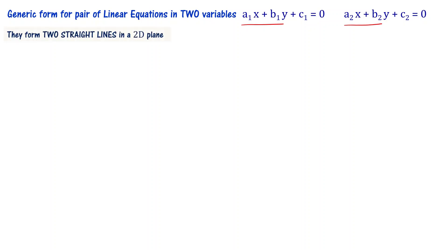Before solving this problem, let us quickly recall some concepts relevant for this. We know that the generic form for pair of linear equations in two variables is a1x plus b1y plus c1 equal to 0, and a2x plus b2y plus c2 equal to 0. When you have two linear equations in two variables, they form two straight lines in 2D plane.